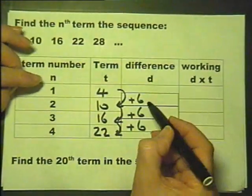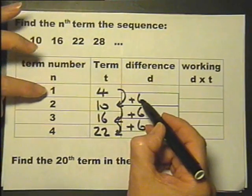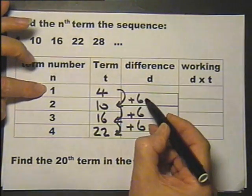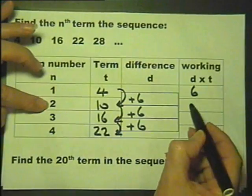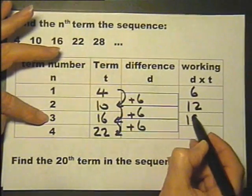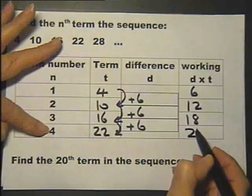Now we're going to do a bit of working out and multiply the differences by the term number. 6 times 1, 6 times 2, 6 times 3, and 6 times 4.